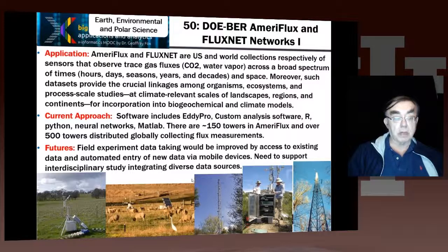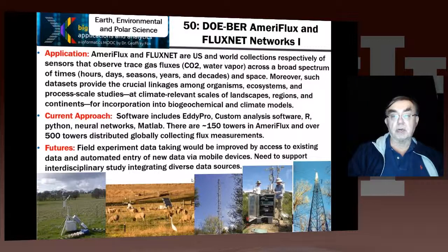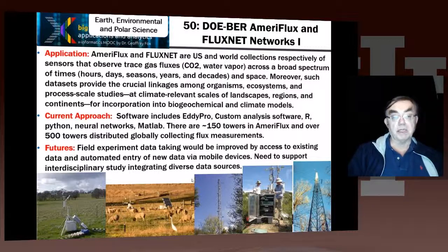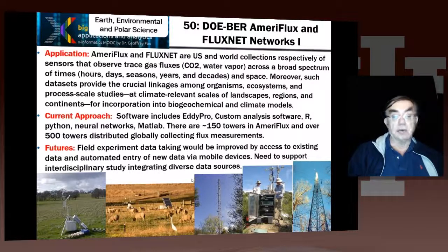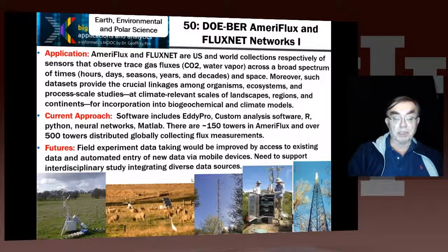The Ameriflux and Fluxnet networks — respectively the U.S. and world collections of sensors measuring trace gases, carbon dioxide, and water vapor across time and space — feed into ecosystem and environmental science studies, which in turn feed into climate change research. Standard software includes custom analysis software, the R statistics package, neural nets, and MATLAB. There are around 150 sites in Ameriflux and 500 sites globally in Fluxnet.